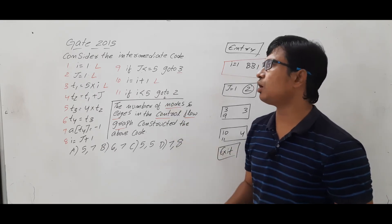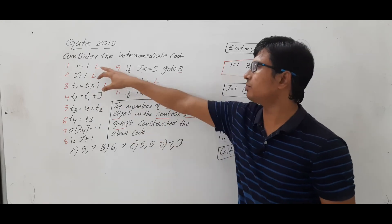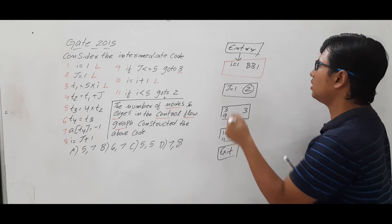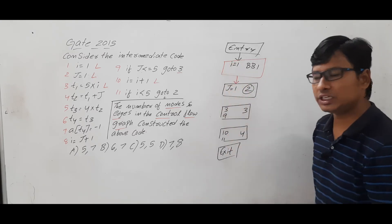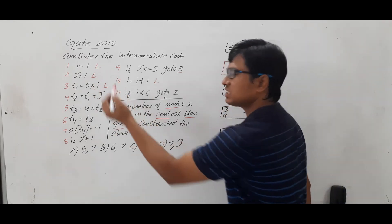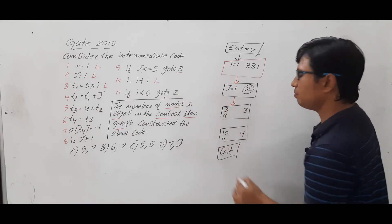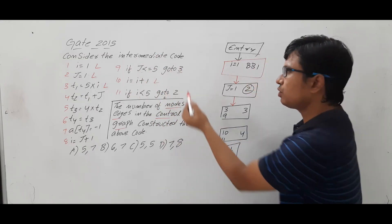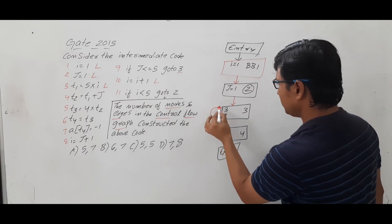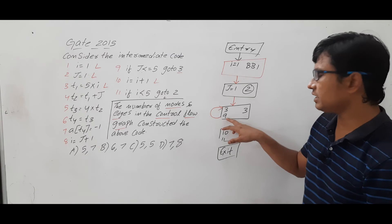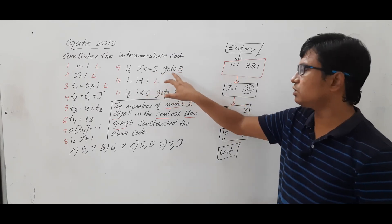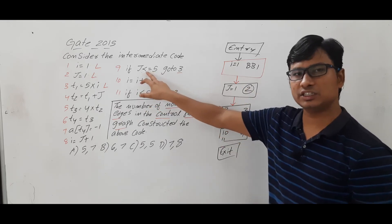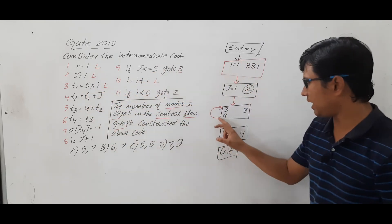Once we have the basic blocks, we need to identify the edges — how the control flow goes. From the entry you go to basic block 1. From basic block 1 you go to basic block 2, because the next instruction is 'j = 1'. From basic block 2 you go to basic block 3, which starts with 't1 = 5 * i'. Now from basic block 3, if the condition 'goto 3' is true, you go back to the same basic block 3.